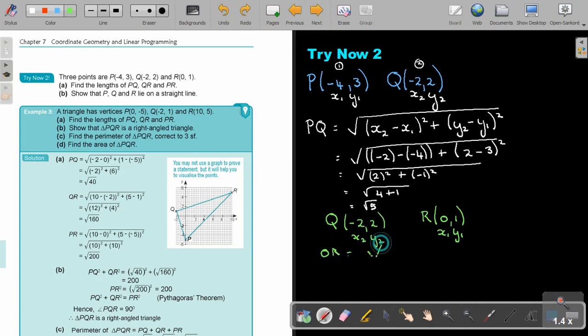It's going to be, and I'm not going to write the formulas. I'm just going to do the substitution. So it's going to be negative 2 minus 0 square plus Y2, 2 minus 1 square.